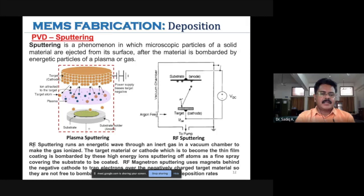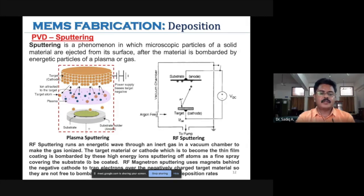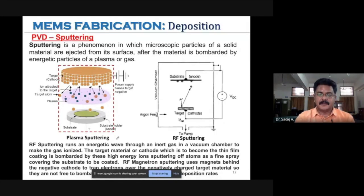RF sputtering runs an energetic wave through an inert gas in a vacuum chamber to ionize it. The target material (cathode) is bombarded by these high-energy ions, sputtering off atoms as a fine spray that coats the substrate. RF magnetron sputtering additionally uses magnets behind the negative cathode to trap electrons over the target material, enabling them to bombard the surface and deposit material on the substrate.